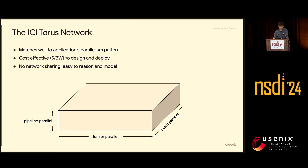We designed the ICIs to have a torus network architecture because we wanted to match the application's characteristics. We think of ML training as having three independent parallelism dimensions: you can divide the weight tensors, divide the input data in the batch dimension, and divide the models vertically along different pipeline stages. So we build a torus architecture and map these parallelism dimensions to each network dimension very efficiently. The torus network is very bandwidth efficient and cost efficient when you factor in cables, switches, and everything together.